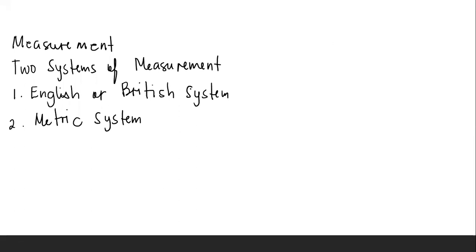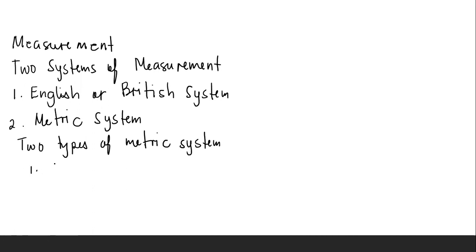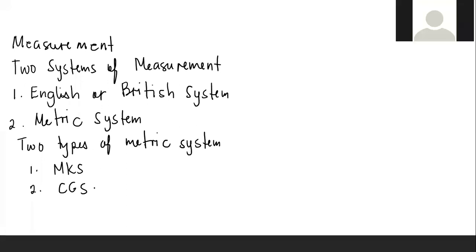Under the metric system, there are two types. Number one is MKS — meter, kilogram, second — which is the International System (IS). Number two is CGS — centimeter, gram, second system.